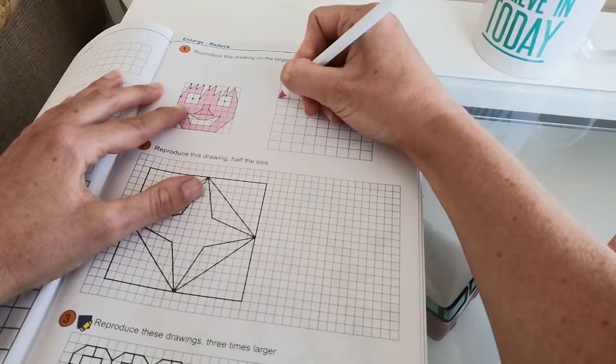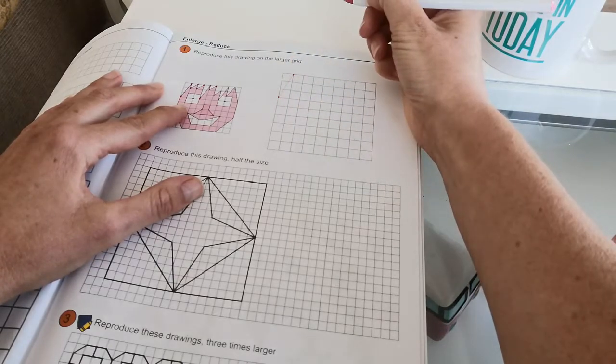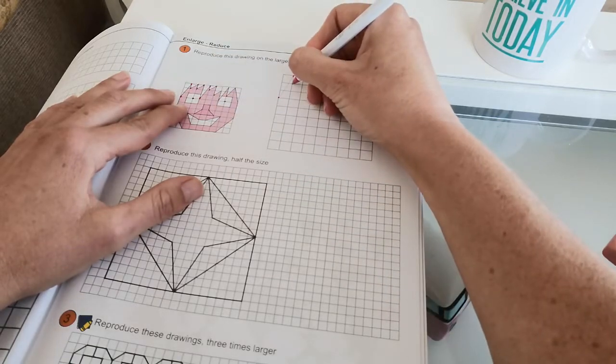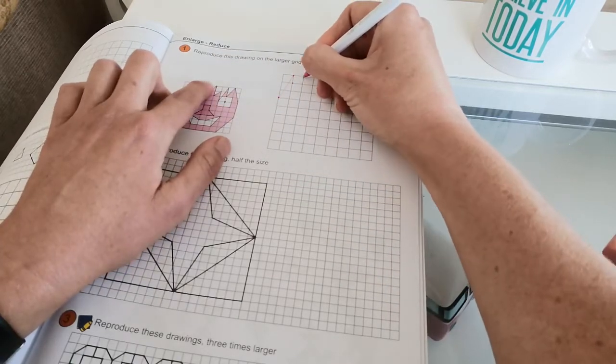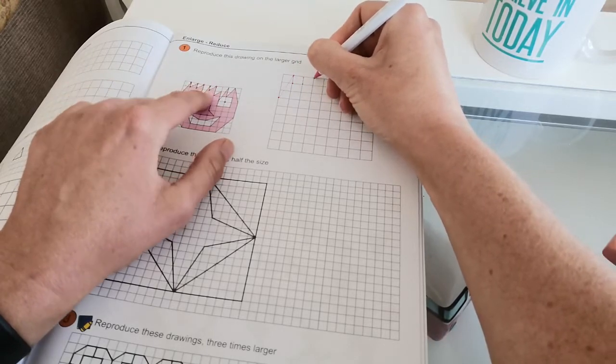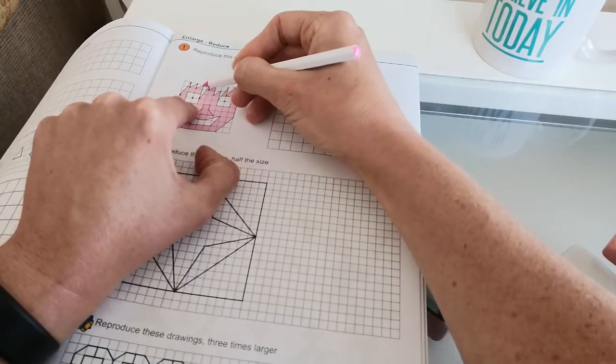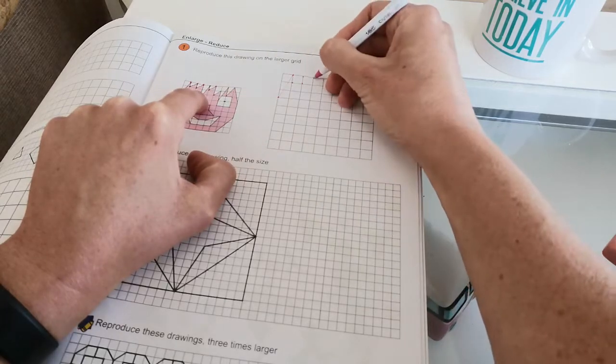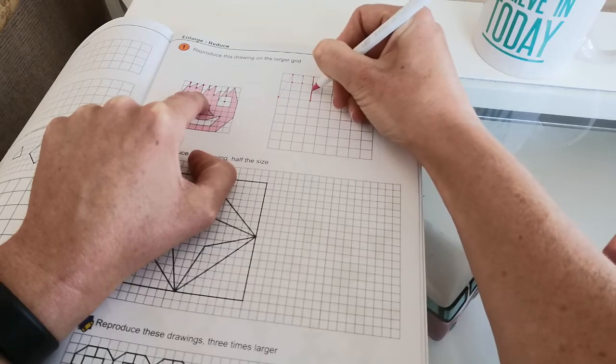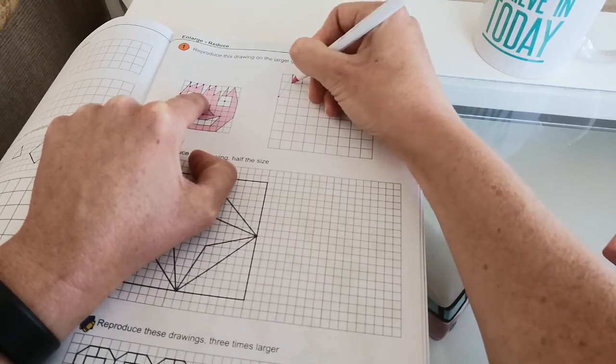You draw a line. I can draw straight lines anyway. Then I go one square down and the next one is here, and then down, and then across. And then I go one, two, three down. One, two, three down. Okay, so the key is to be patient.